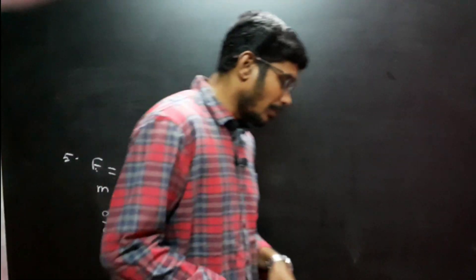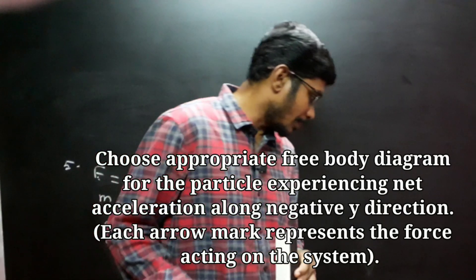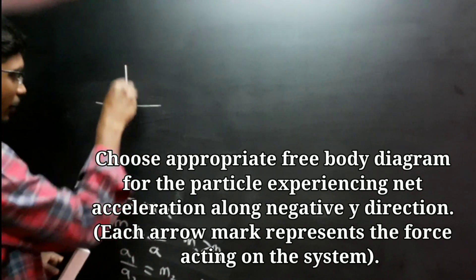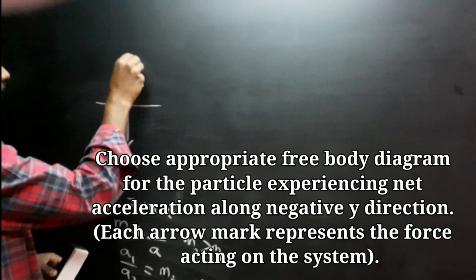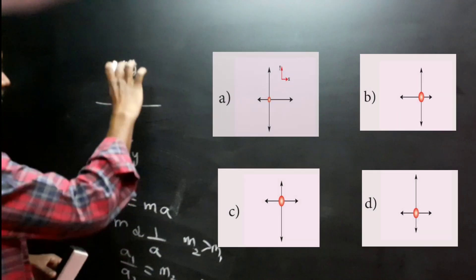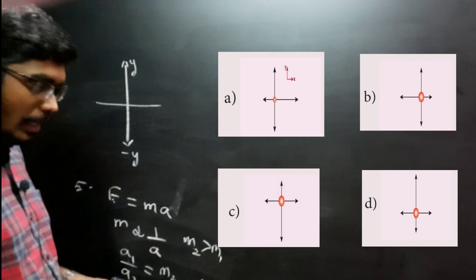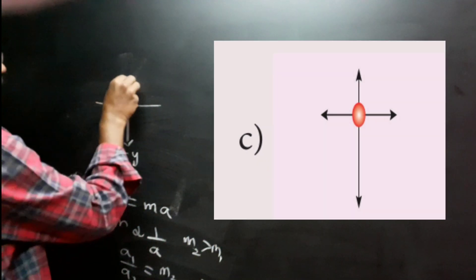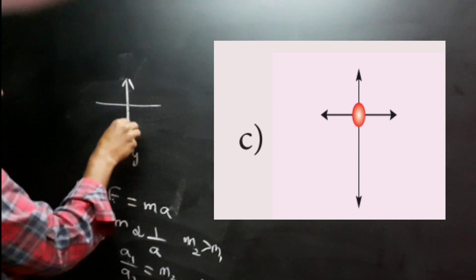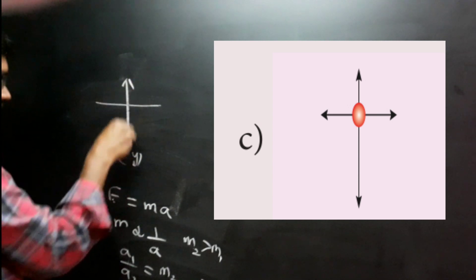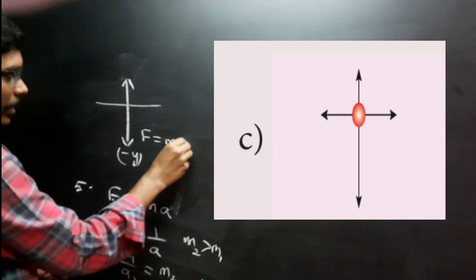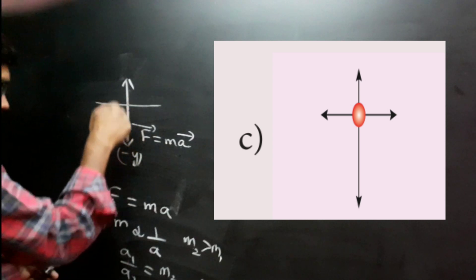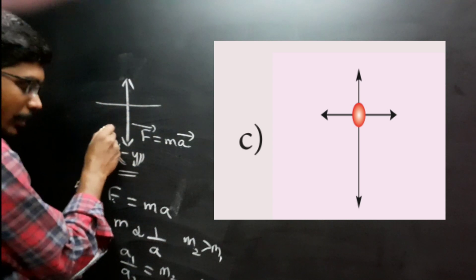Question 6: What is unbalanced force in the negative Y direction? Negative Y means this is the Y axis — positive Y is up, negative Y is down. This is unbalanced. If you look at option C in the diagram, the net force points in negative Y.